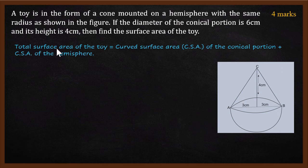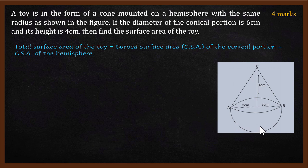First thing is, the total surface area of the toy is equal to curved surface area of the conical portion plus curved surface area of the hemisphere. Why not base? Because the base is hidden. So only the curved surface area of the cone and the curved surface area of the hemisphere have to be taken into account. If you add those two, you get the total surface area of the toy.